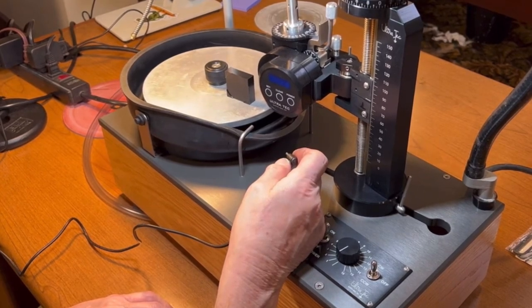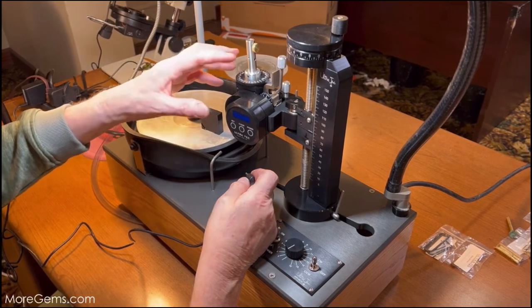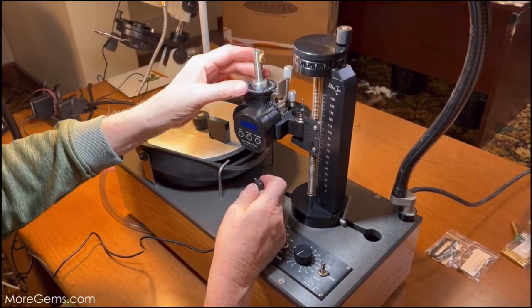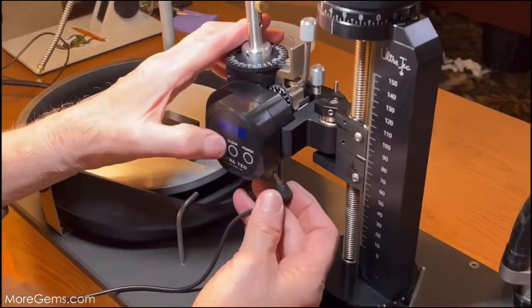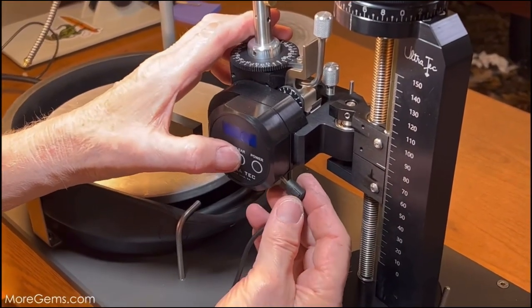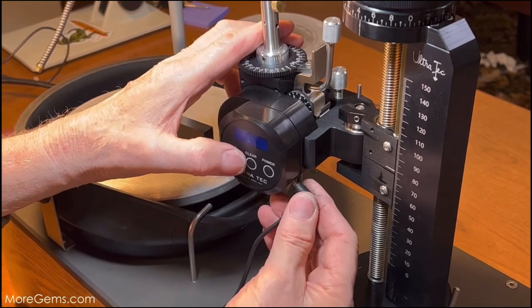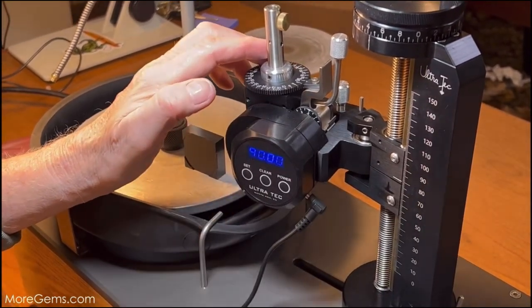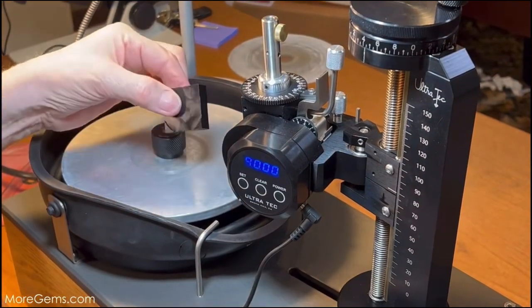Calibrate the digital angle display by putting the mast up and inserting the power plug at the same time as pushing the clear button, and it'll read 90 degrees for you. Now we're going to use this block and adjust for 90 degrees.